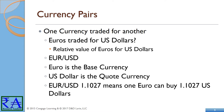The currency used as the reference is called the base currency, and the currency quoted in relation is called the quote currency or counter currency. In this case, EUR/USD 1.1027 means that 1 Euro can buy 1.1027 US Dollars. The Euro is the base currency, and the US Dollar is the quote currency.